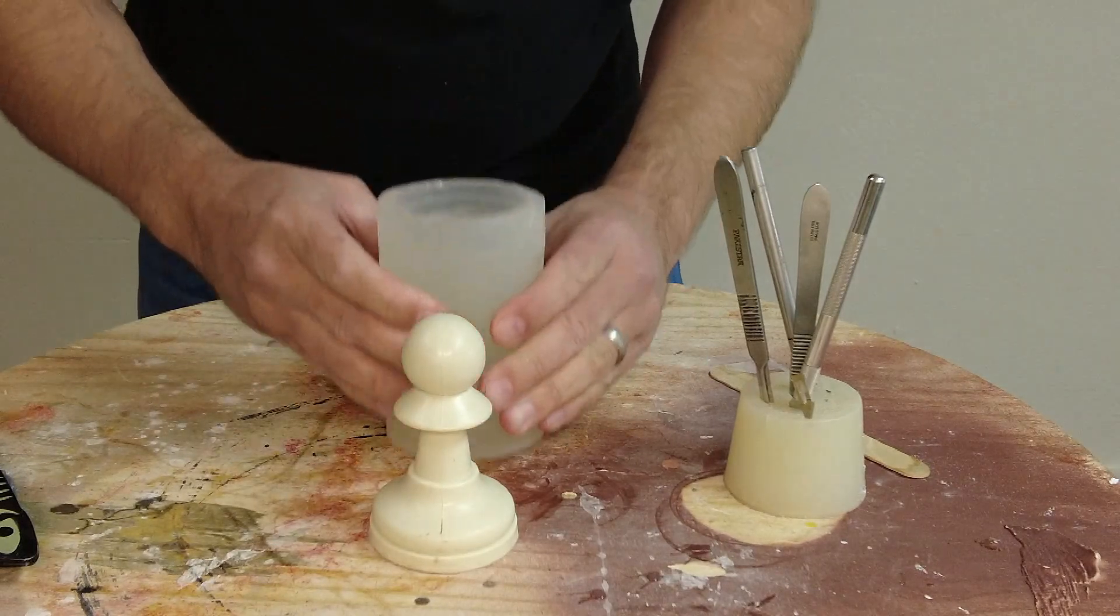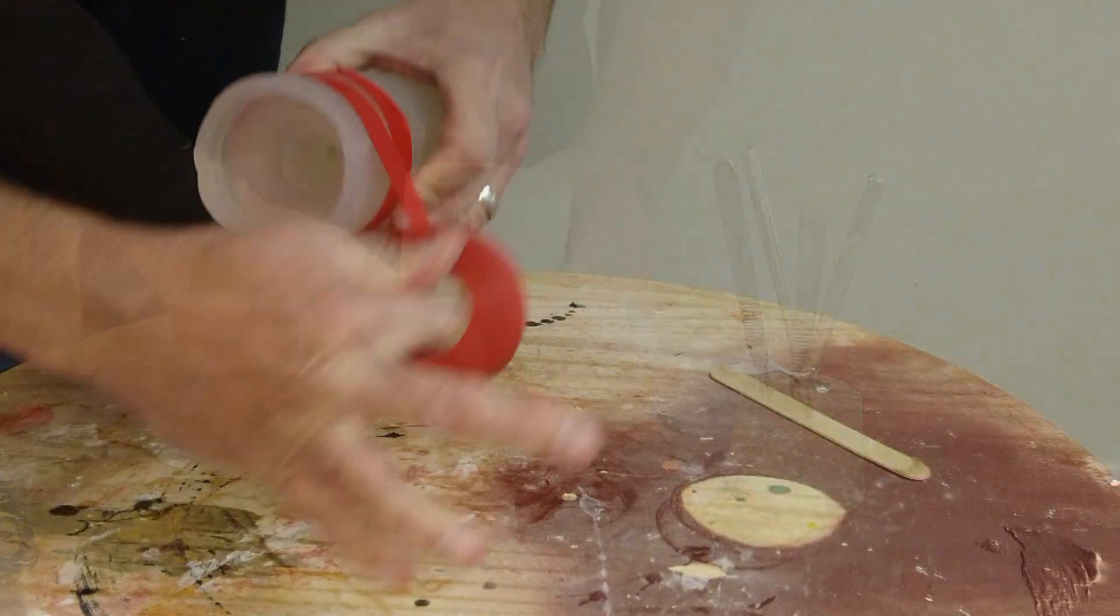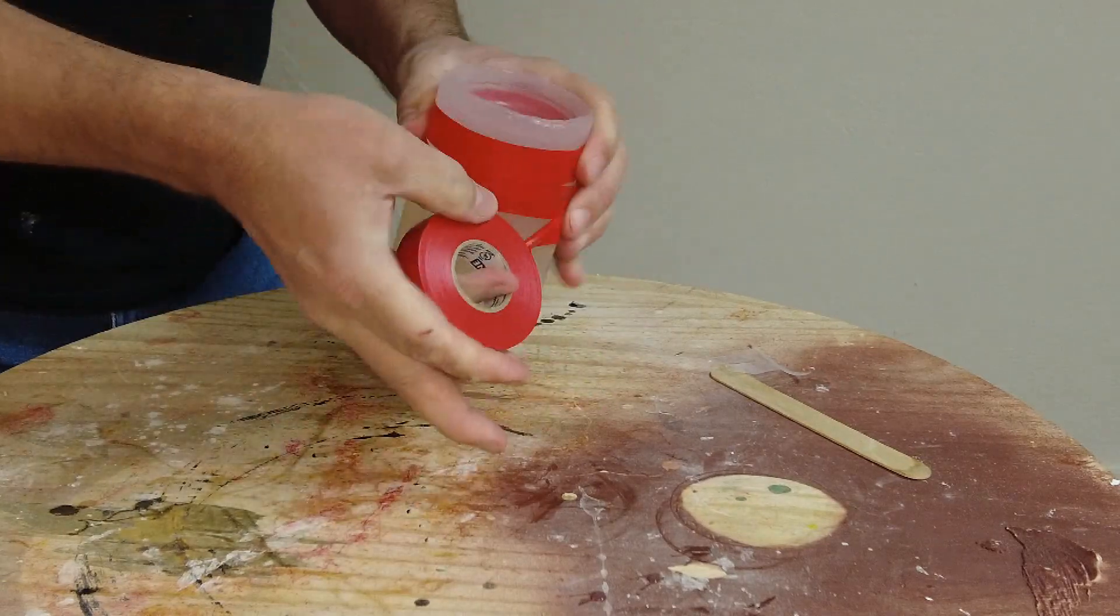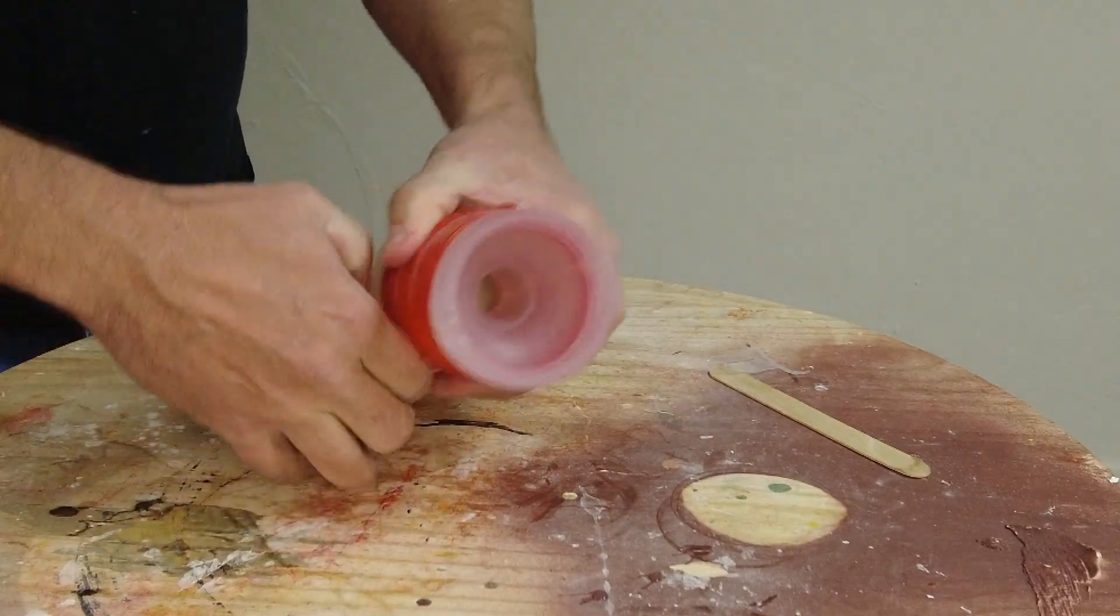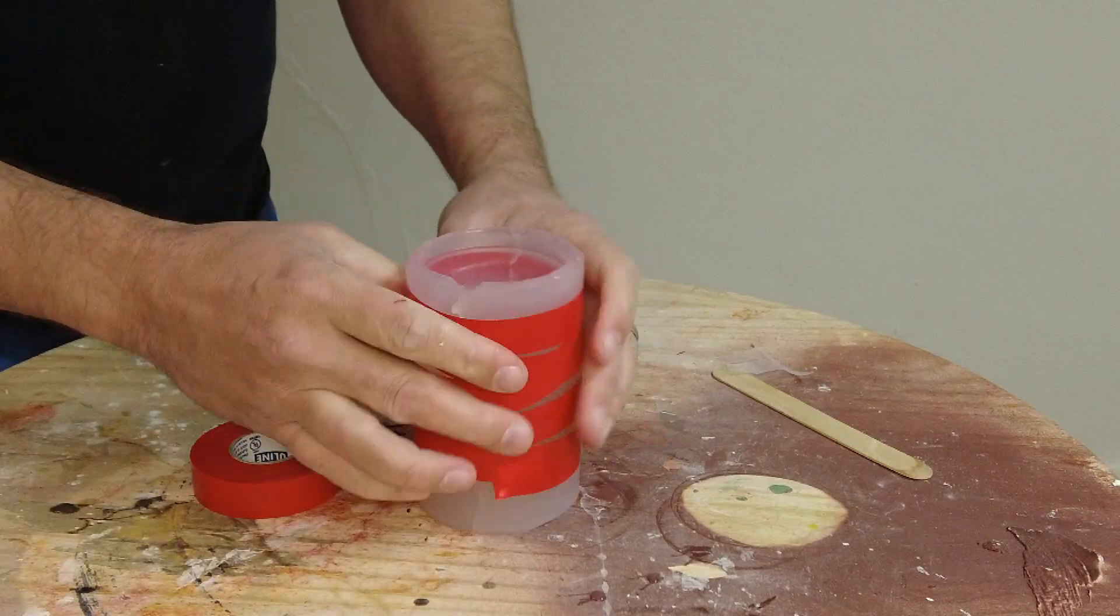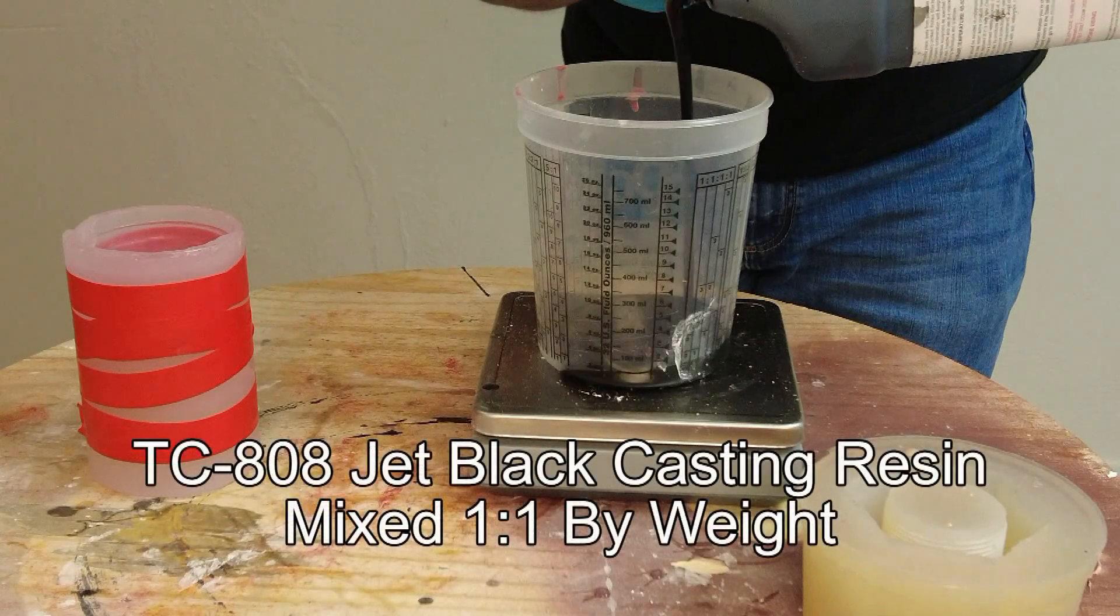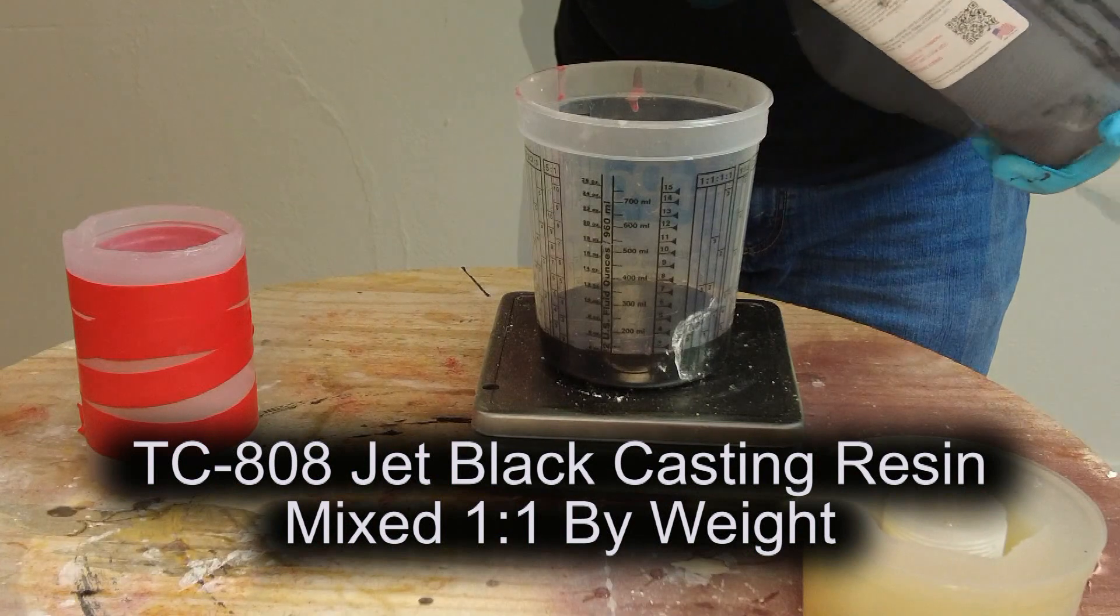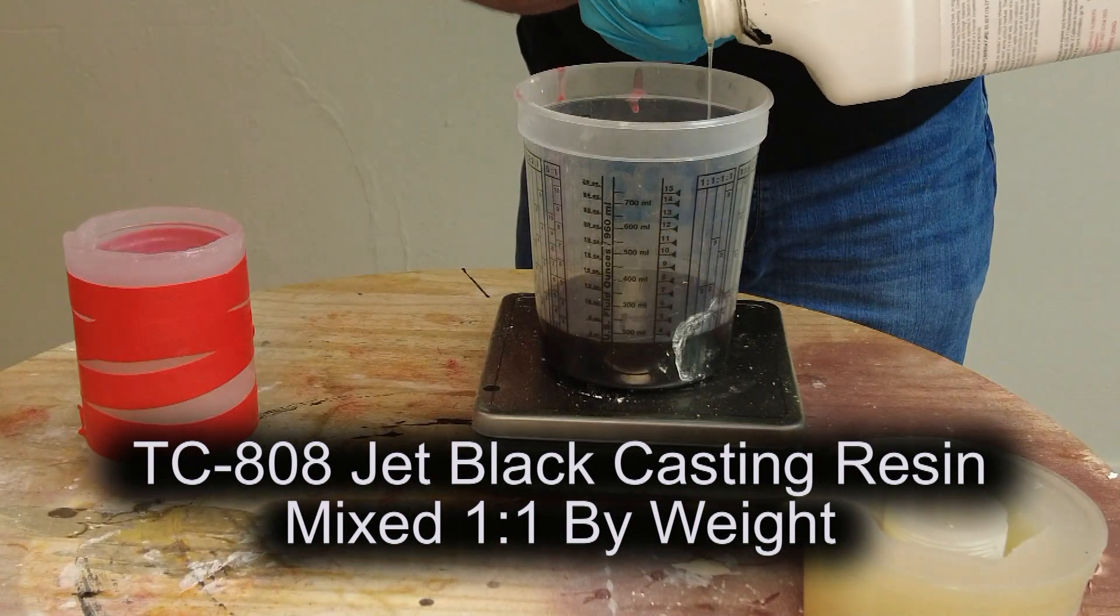Now to secure these two halves together, you could either use some rubber bands or for this particular video, I had some friction tape or some electrical tape handy. So I just use that to tape up the mold. Now ready for some casting. Just to demonstrate that nice tight seam, I decided we'd cast some TC-808 I had sitting around the shop. TC-808 is available in both the standard white formula and the jet black formula. Here I want to do the jet black formula for my little chess piece here.